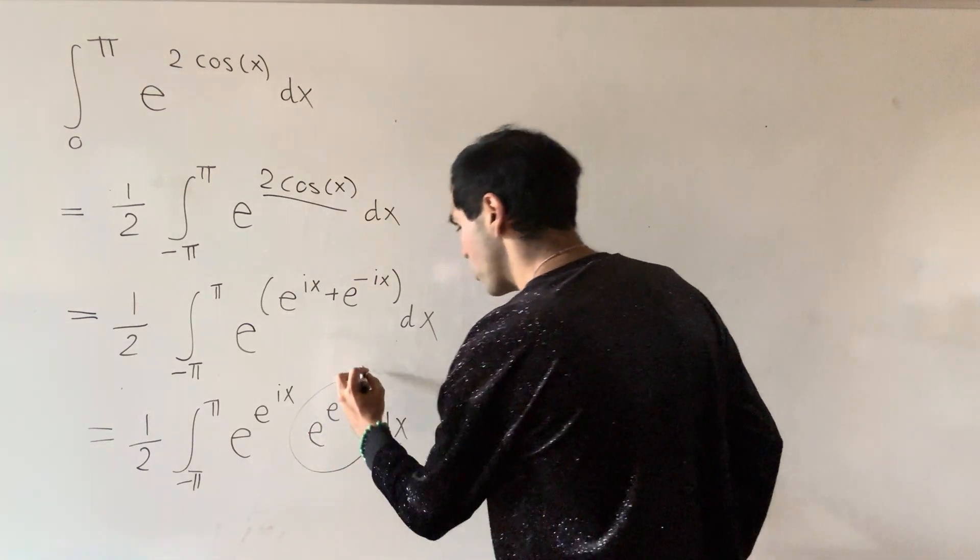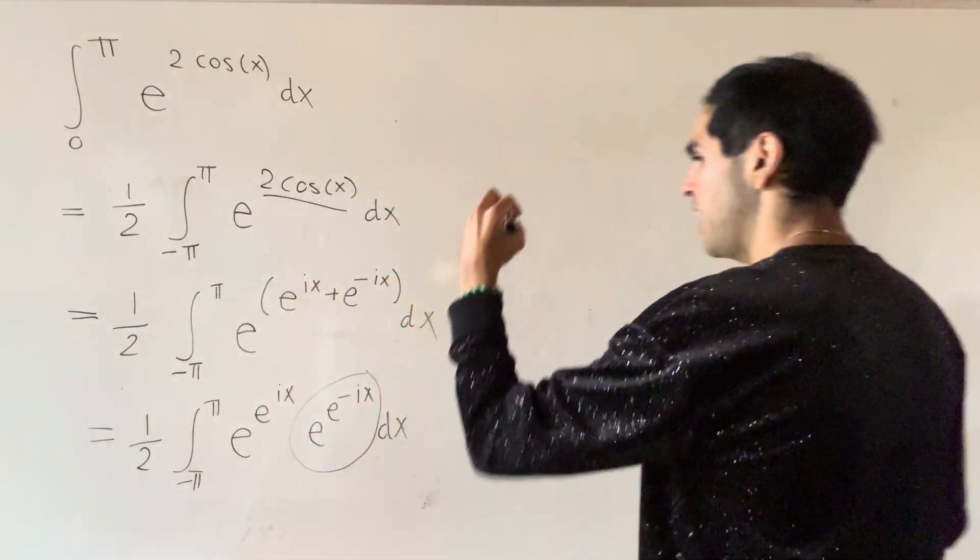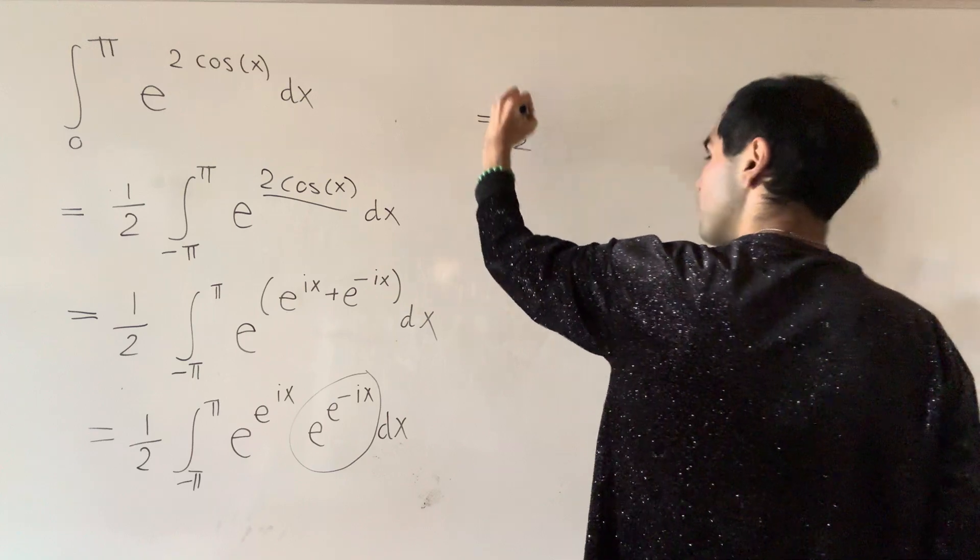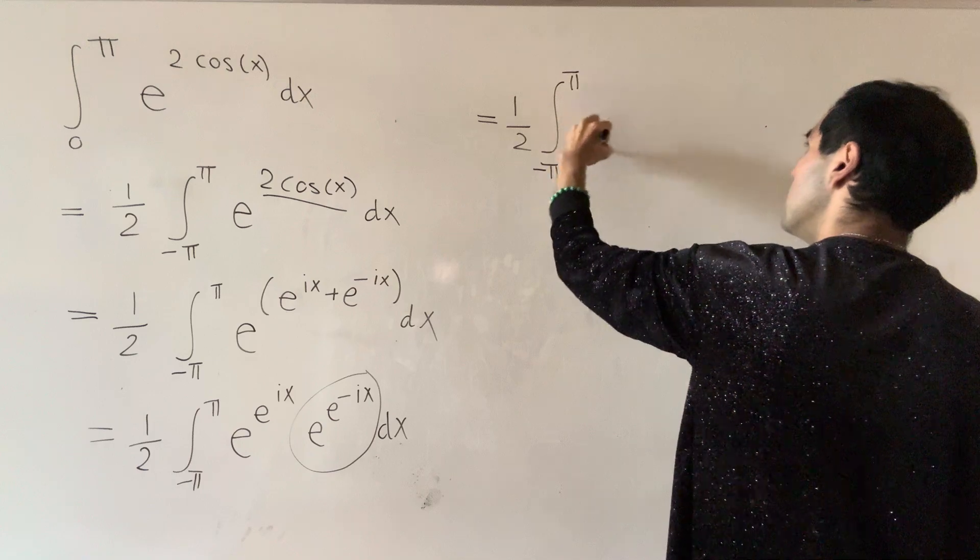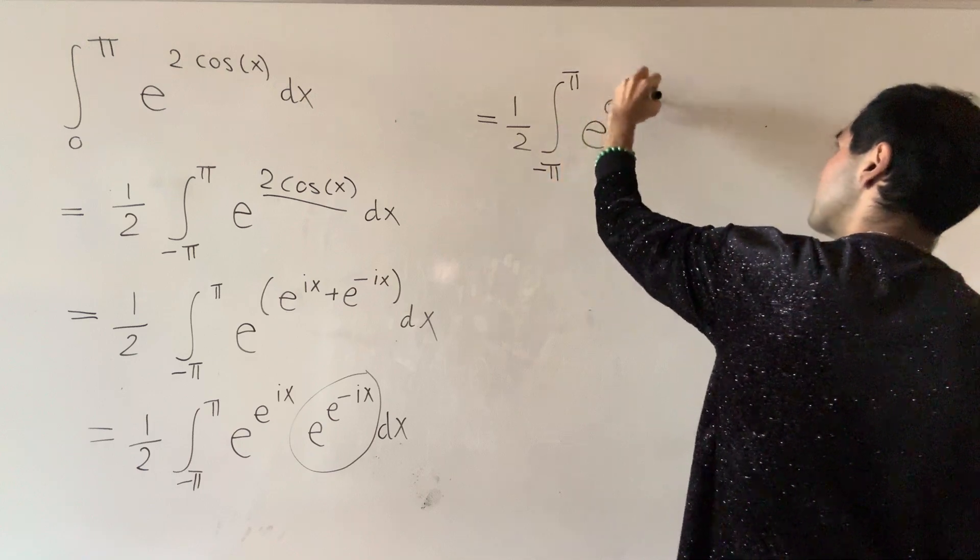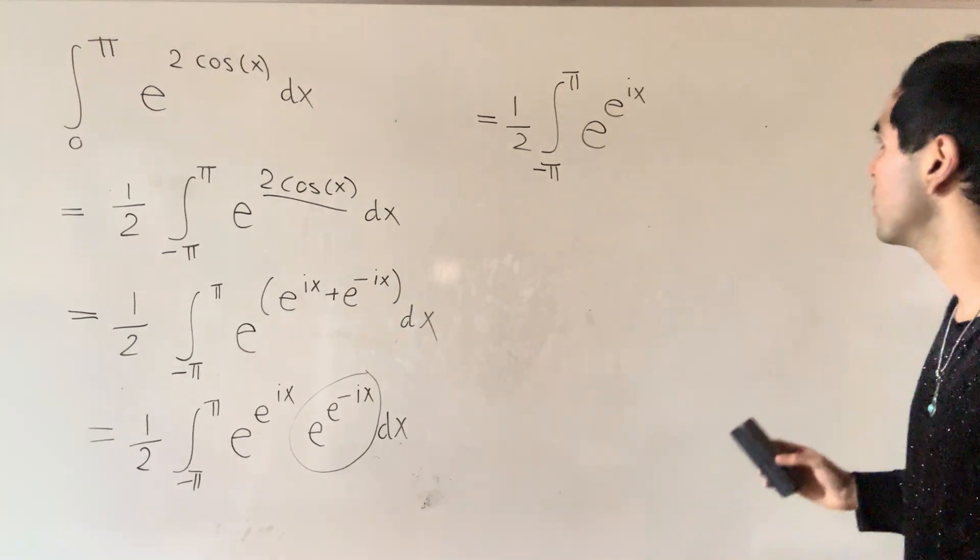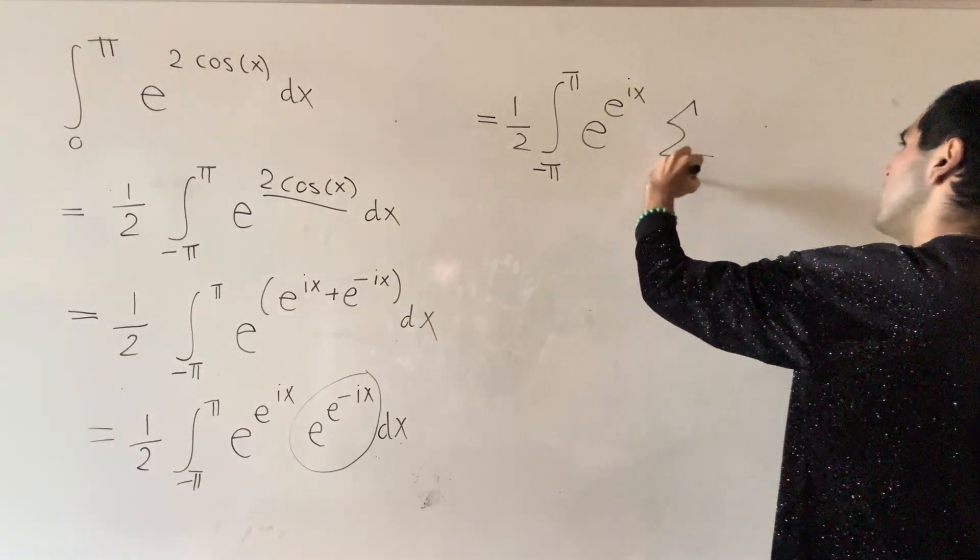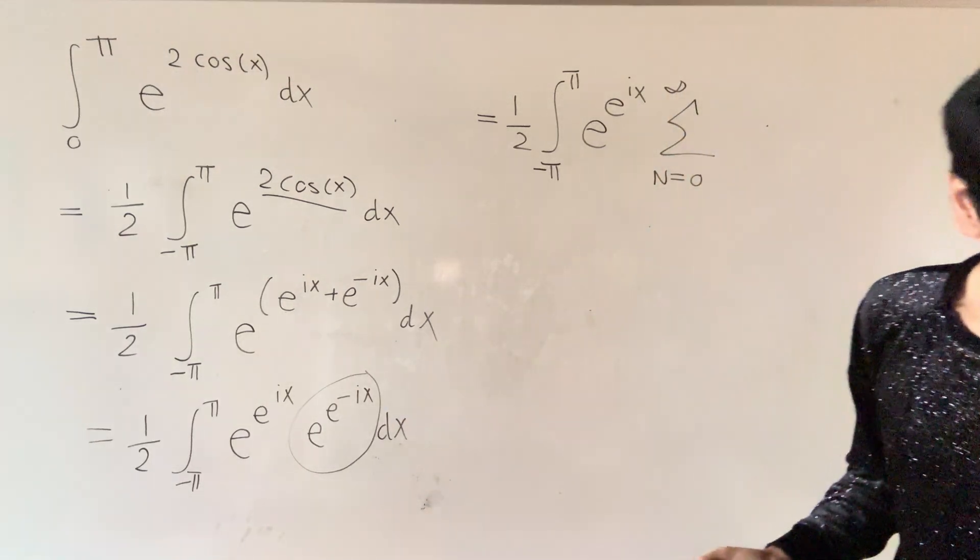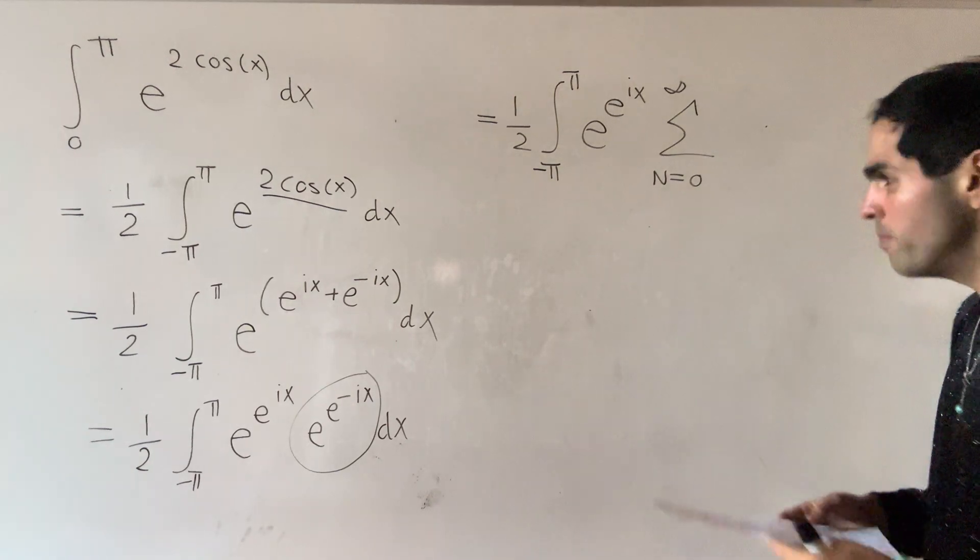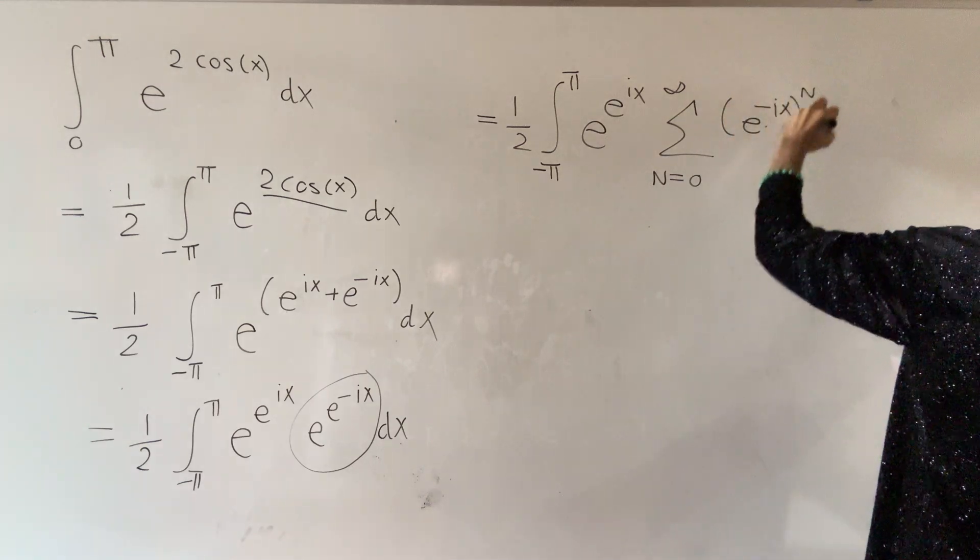So now let's keep this first term. That's not a problem. But the second term, let's Taylor expand it out. So this is one half of the integral from minus pi to pi of e to the e to the i x, and the sum from n from 0 to infinity of z to the n over n factorial, which here is e to the minus i x to the n over n factorial.